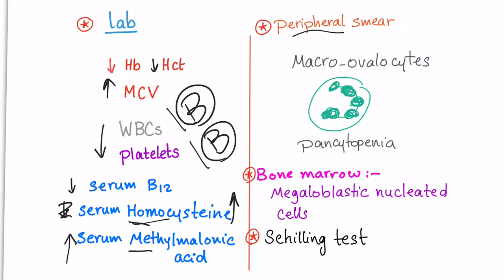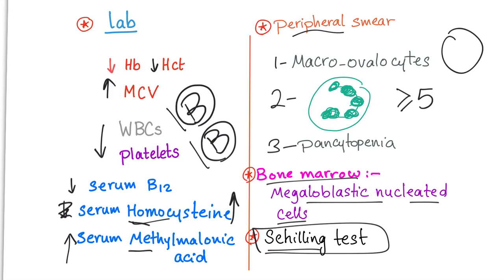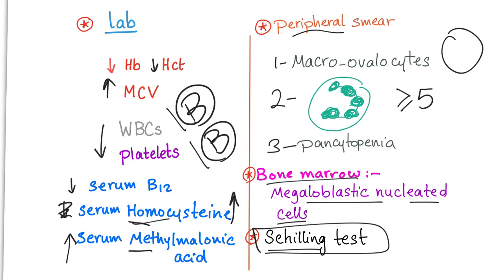How about the peripheral smear? We will have macro ovalocytes, large RBCs. We'll have hypersegmented neutrophils with more than five lobes. Pancytopenia. Bone marrow biopsy will yield megaloblastic nucleated cells. Schilling test can diagnose B12 deficiency. It's rarely done. Maybe I'll discuss it in a separate video.